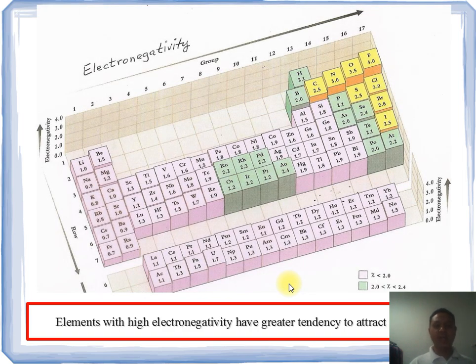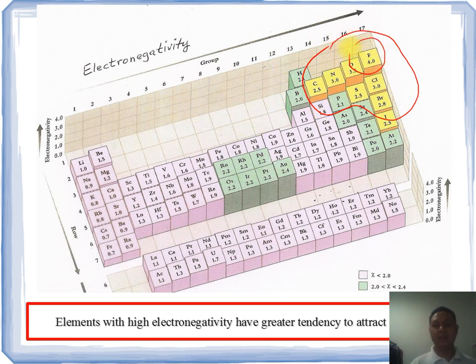Elements with high electronegativity have greater tendency to attract electrons. This figure shows the trend of electronegativity across a period and down a group. The most electronegative elements are shown in yellow. So, fluorine is the highest electronegativity atom.